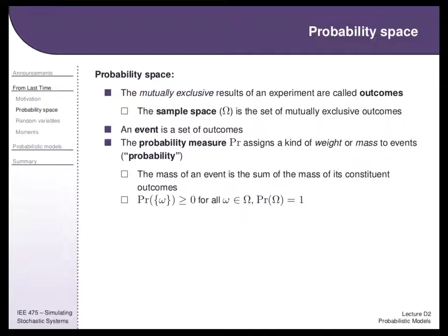Because we're dealing with randomness, we have to go back into some fundamentals of probability since we're going to be using probabilistic models. Last time we introduced the sample space — usually denoted by omega — which is the set of all outcomes that can happen in the real world. An event is a subset of the set of all outcomes. The sample space itself is an event with probability one, and a generic event is some subset of outcomes, each of which we can assign a probability to.